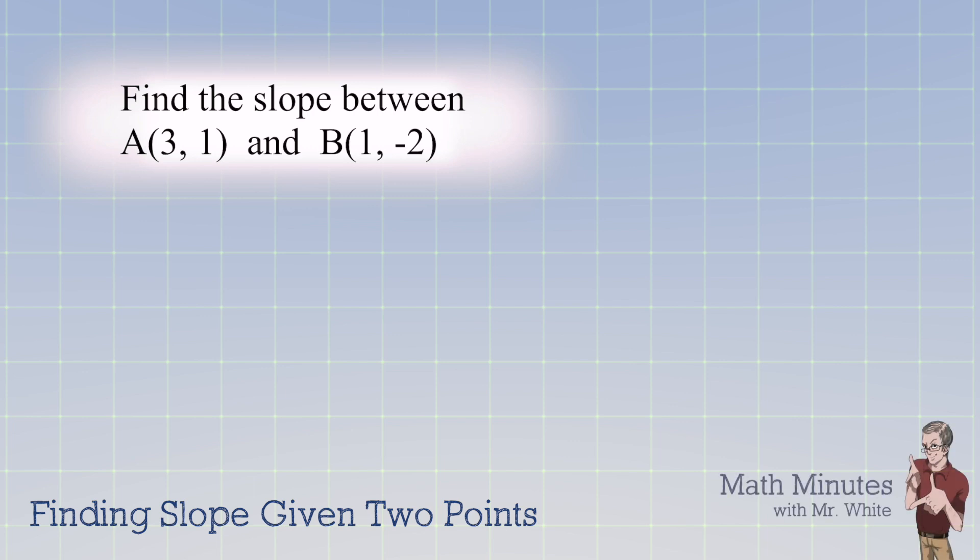Well, we're going to label this first point A. We're going to call that x1, y1. And then point B, that's going to be our x2, y2.